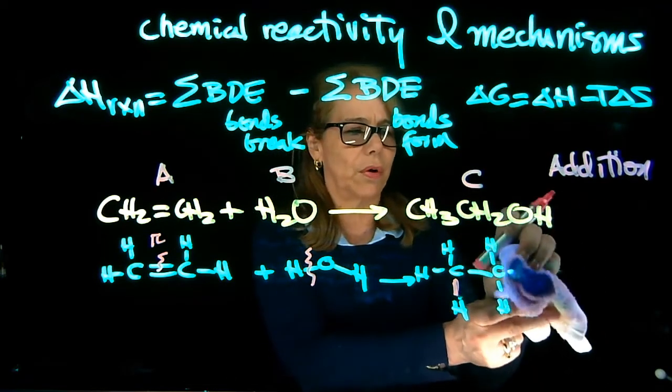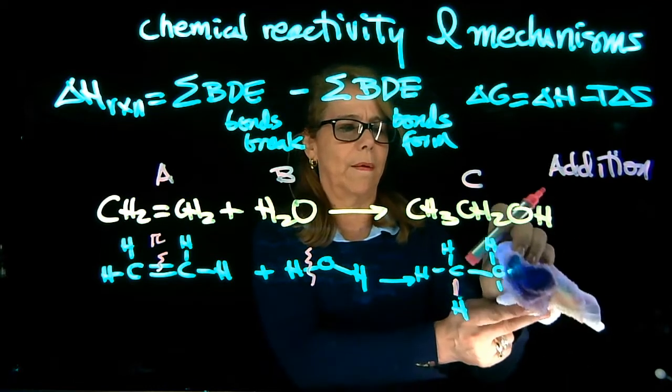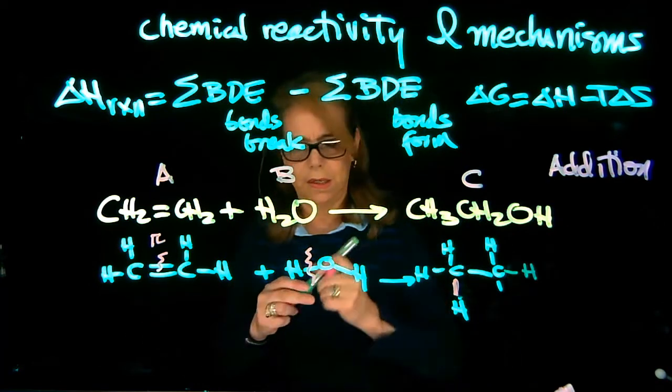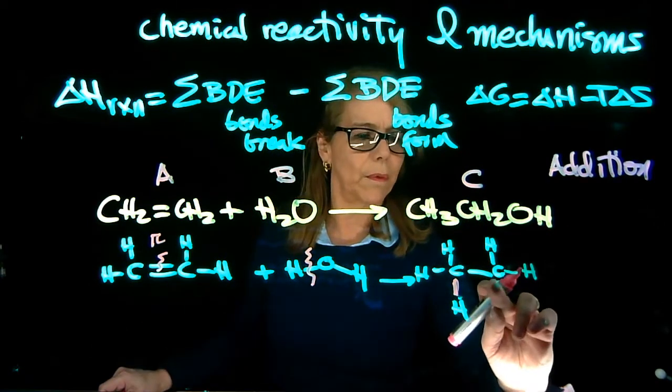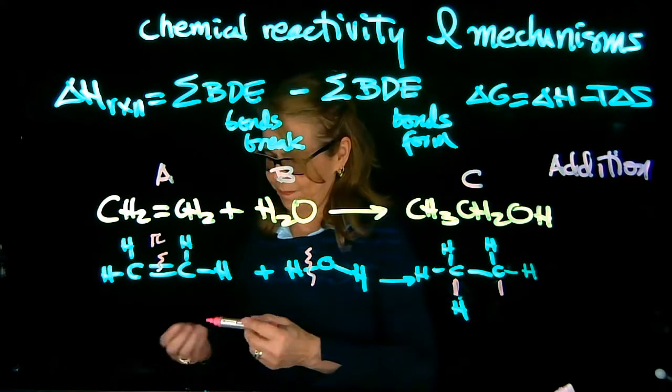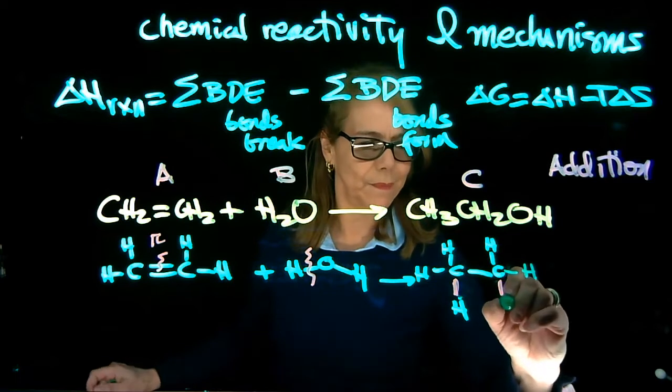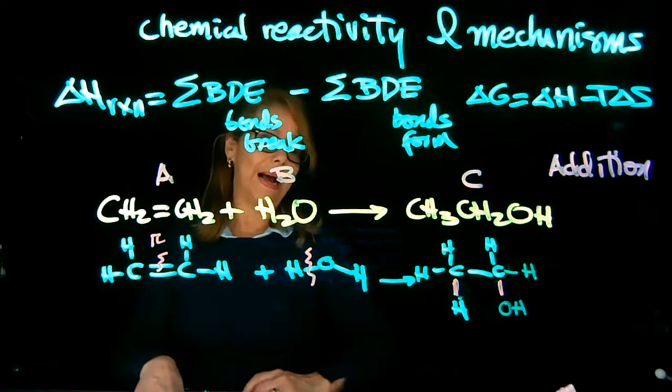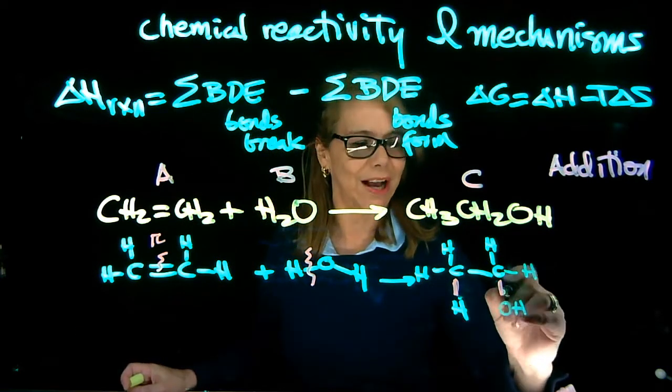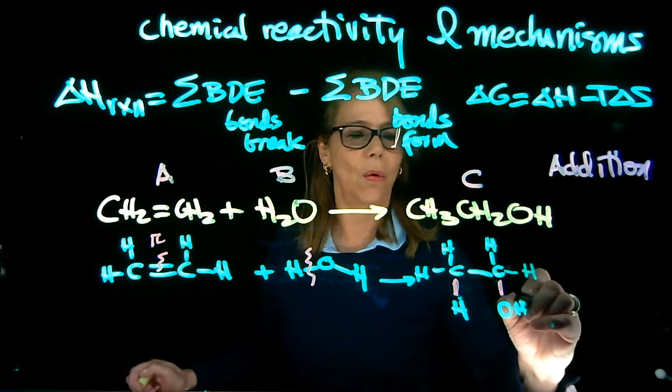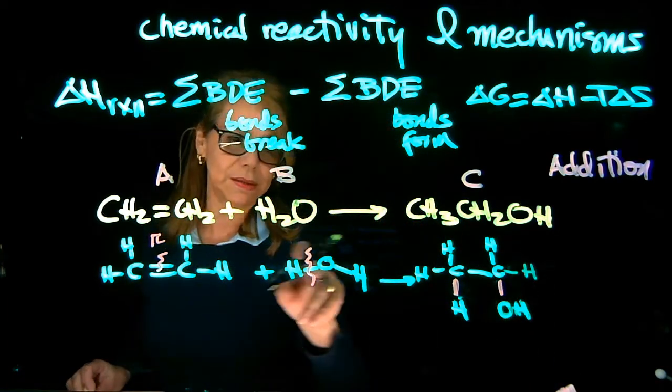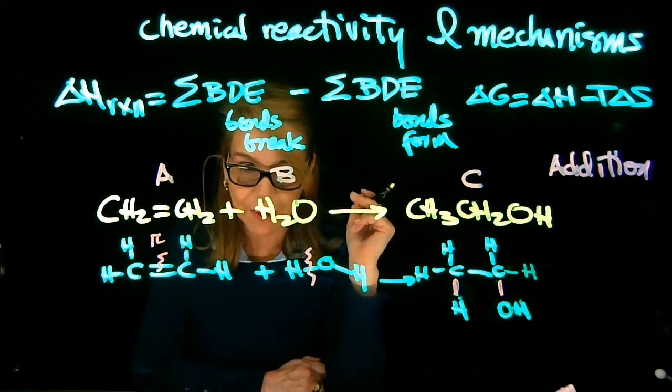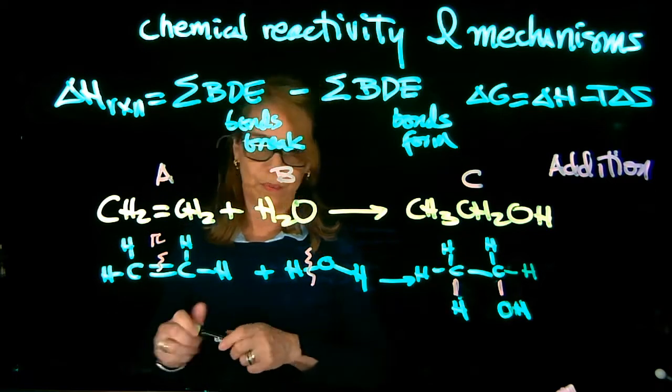Let me just redraw that. So this is what I'm adding, this molecule is this molecule. What did I do? I added an H and an OH across the double bond. What we broke: one pi bond and one sigma bond here between oxygen and hydrogen, and we have formed two new sigma bonds.